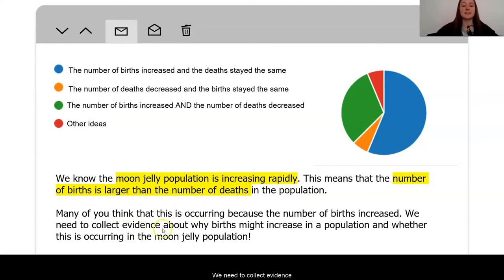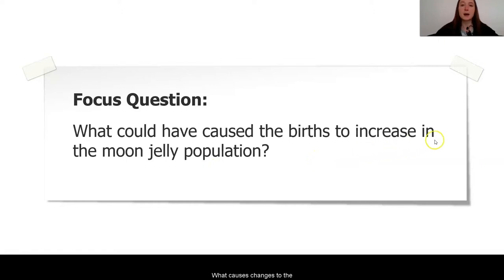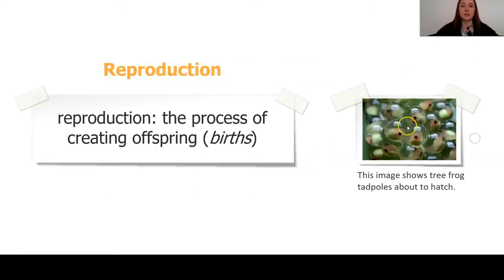We need to collect evidence about why there might be changes in the number of births in a population and whether this is occurring in our moon jelly populations. Our focus question for this portion of the unit is: what could have caused the births to increase in the moon jelly population? What causes changes to the birth rate in a population?